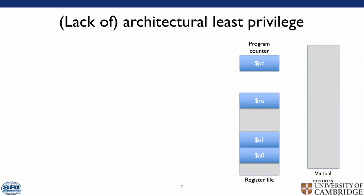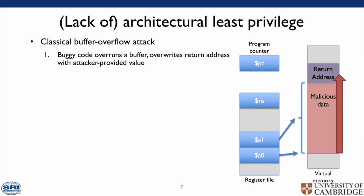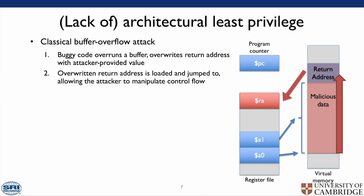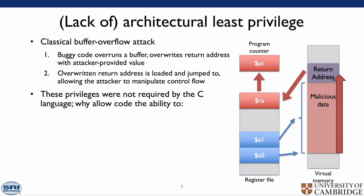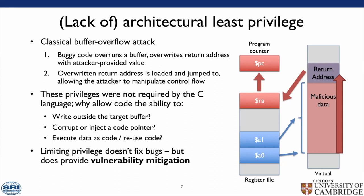We'll look at an example of architectural privilege with a classic buffer overflow attack. We allocate a buffer on the stack where the return address is above the buffer. Malicious data written to the buffer may then overwrite the return address. This return address gets loaded into the return address register, and a non-function return is loaded into the program counter, at which point the CPU executes from this malicious address. These privileges were not required by the C language — so why are we allowing code to write outside its target buffer, corrupt or inject code pointers, execute data as code, or reuse code in unintended ways? Limiting privilege doesn't fix bugs, but it does provide vulnerability mitigations.